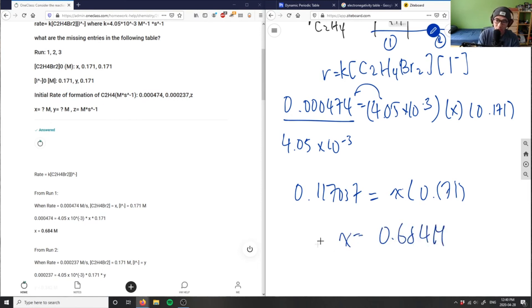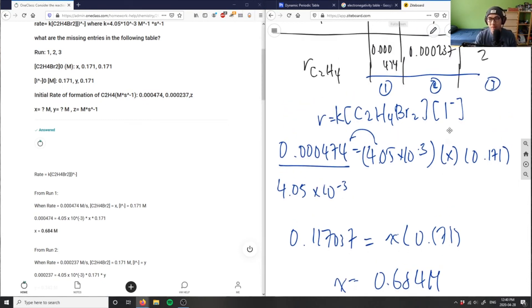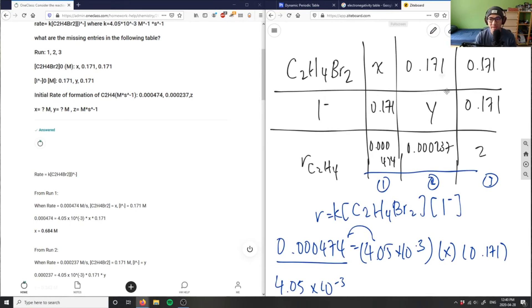And this here is correct from this run here. We're going to do the exact same thing and use the exact same rate law to solve for Y and Z here. But in this case, we're isolating for Y. And in this case, we're isolating for our rate. That's kind of the entire question. We just have to use this rate law.